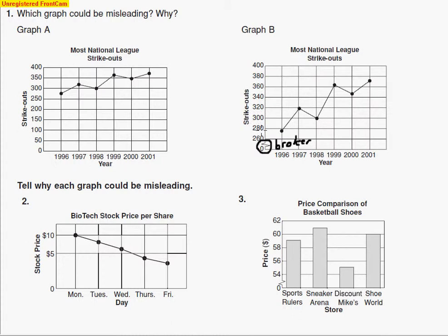See, they're only going up by 20s here, while on the other one, they're going up by 50s. So when they went up by 50s, the graph looked a little straighter. Well, here, it looks a lot steeper, and it looks like they change a lot more also when they have it broken. And so that's what makes this misleading.